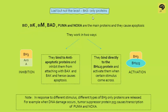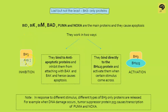Now for the BH3-only family of proteins — they are a large family: Bid, Bim, Bad, PUMA, and Noxa. A silly trick to remember them: 'D for don't, K for kill, M for me, it's Bad, says PUMA to Noxa' — that is, 'don't kill me, it's bad,' says PUMA to Noxa. These BH3-only proteins work in two different ways: they can either go and attach to anti-apoptotic family proteins and inhibit them, causing apoptosis.